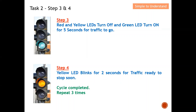Step three indicates for traffic to go, so the green LED will turn on while the red and yellow LEDs are turned off. The green LED will stay on for five seconds so traffic can start to move. For step four, the yellow LED blinks for two seconds to indicate traffic is ready to stop soon. After this, the cycle repeats three times.